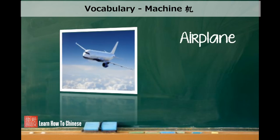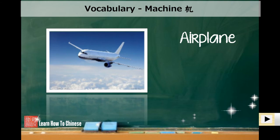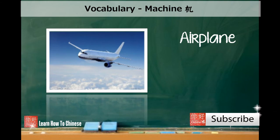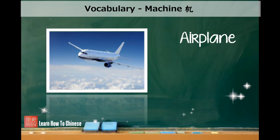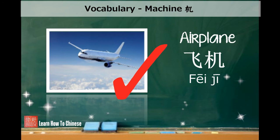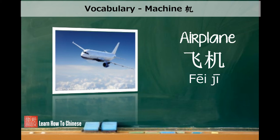Airplane is another machine in this video. An airplane in Chinese consists of two words. Unlike car, che, they are fei and ji. Fei means flying, and ji is machine. So a flying machine means an airplane in Chinese.